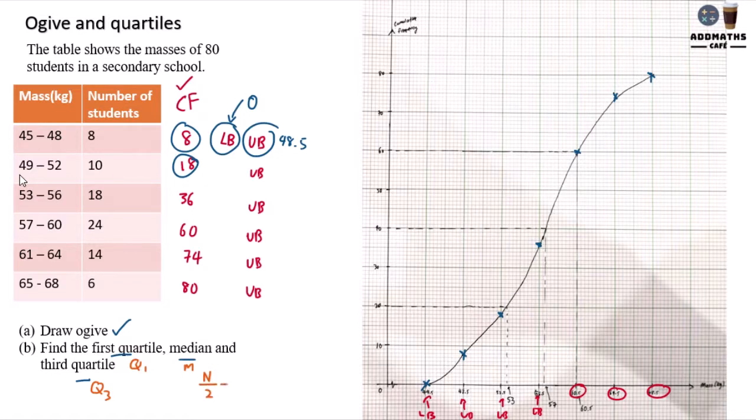So median formula is N over 2. You have 80 divide 2, you get 40. So look at 40 over here, draw a dotted line, bring it down, and you will have 57. So your median is 57.